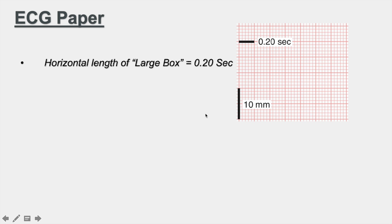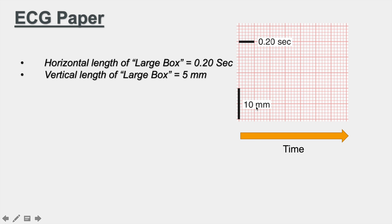We'll first look at ECG paper and how it's laid out. If we were to take a close-up look at ECG paper, we would see that it is made up of many small boxes grouped within larger boxes, and each of these larger boxes is a grouping of five by five of the smaller boxes. The horizontal length of each large box is 0.2 seconds of time, so the horizontal axis denotes time. The vertical height of each large box denotes five millimeters, so the vertical axis denotes voltage.